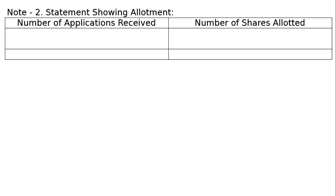A person holding 100 shares failed to pay allotment and first call; his shares are forfeited. This is a case of pro rata — very important.